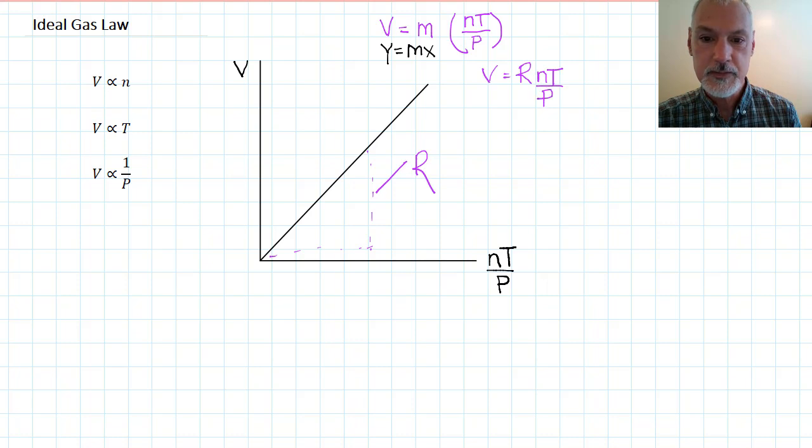So we have the equation then V is equal to R nT over P, which is often put in a linear form, meaning we multiply both sides by the pressure, and you'll often see the equation PV equals nRT. And this is what's in your IB data booklet.